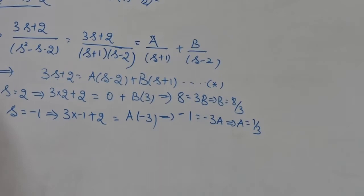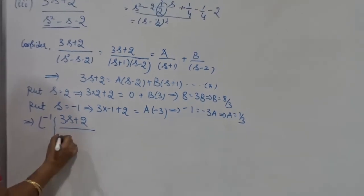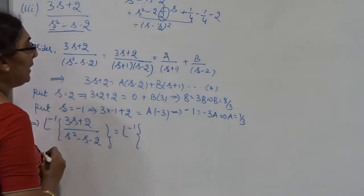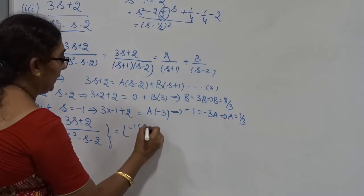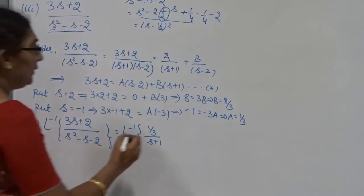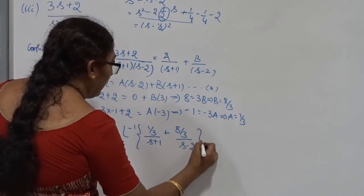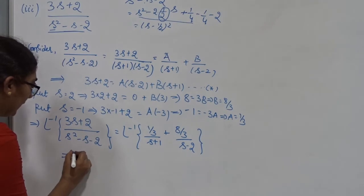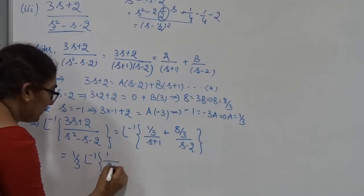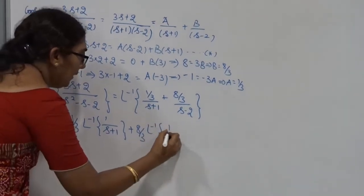Therefore, L inverse of (3s + 2)/(s² − s − 2) can be written as L inverse of [(1/3)/(s + 1)] plus L inverse of [(8/3)/(s − 2)]. From the linear property, this can be written as (1/3) L inverse of [1/(s + 1)] plus (8/3) into L inverse of [1/(s − 2)].